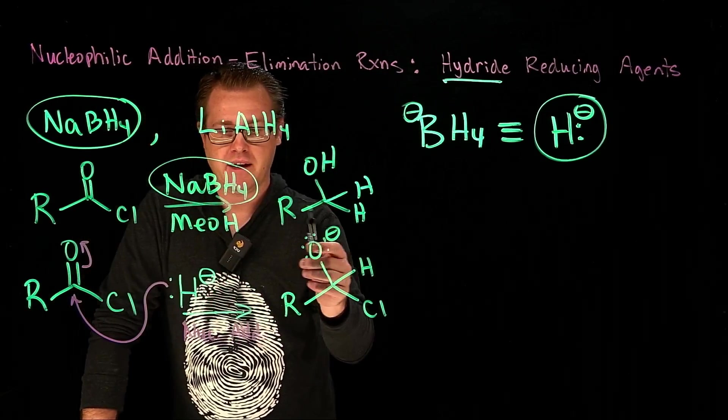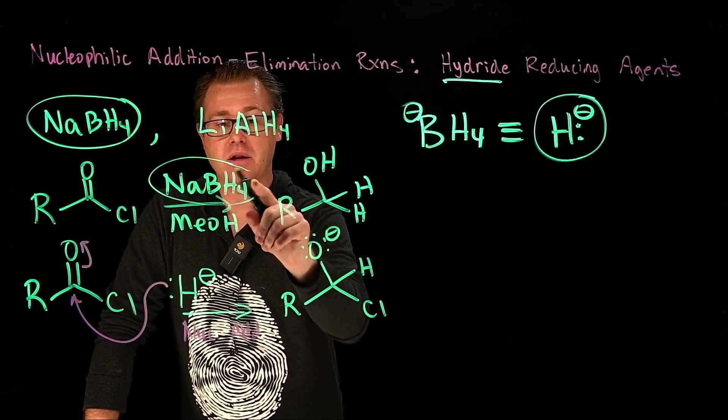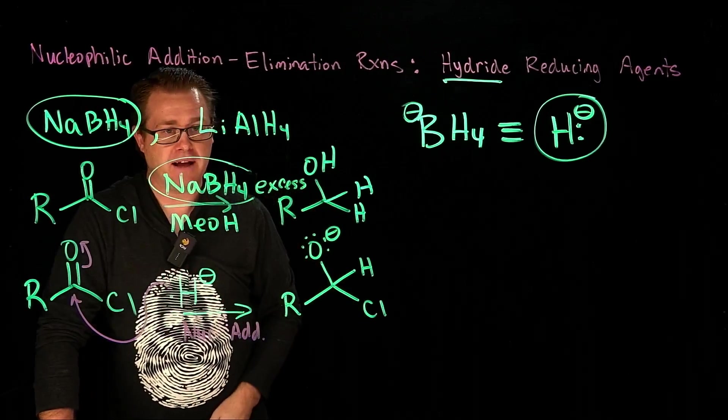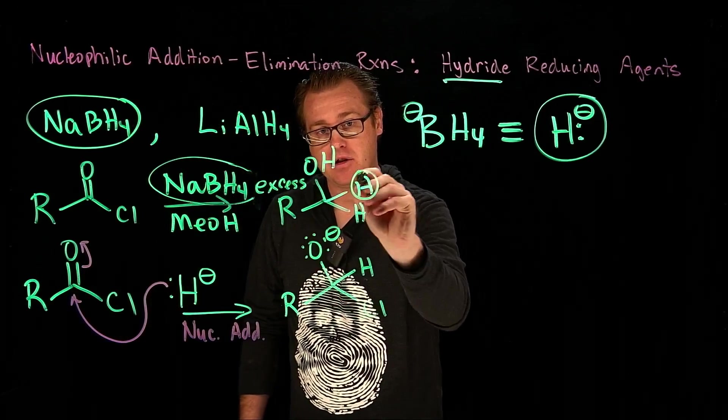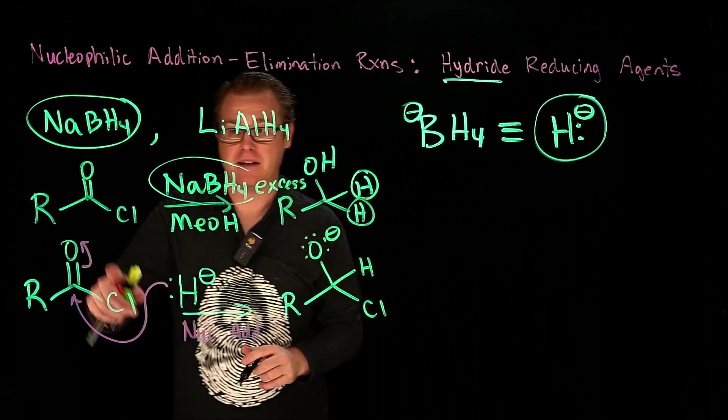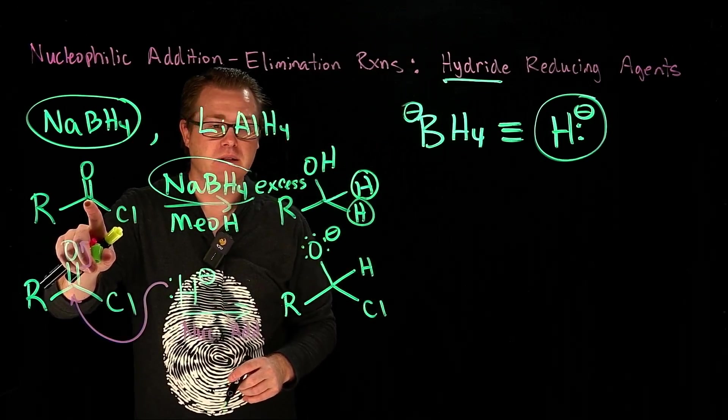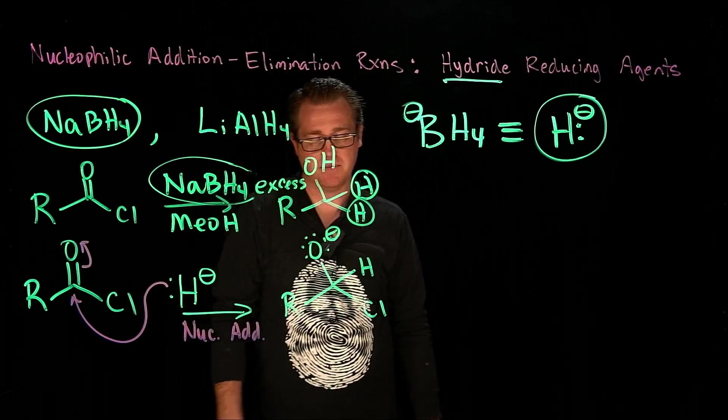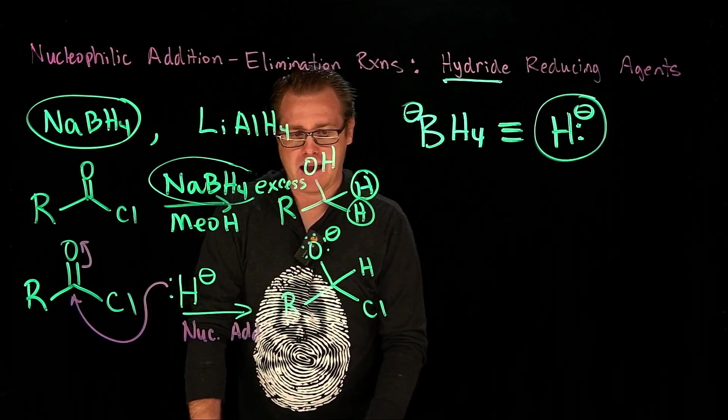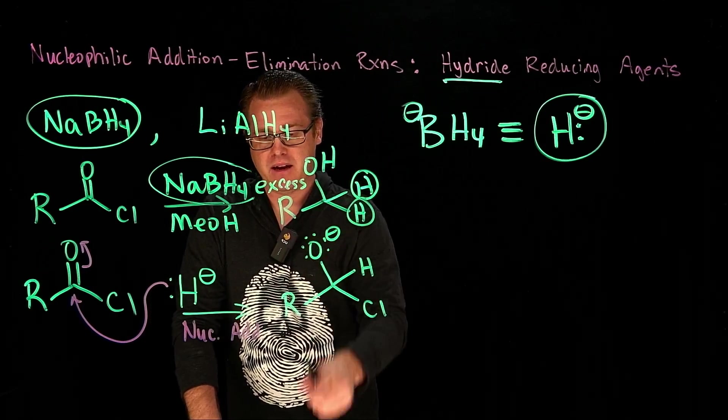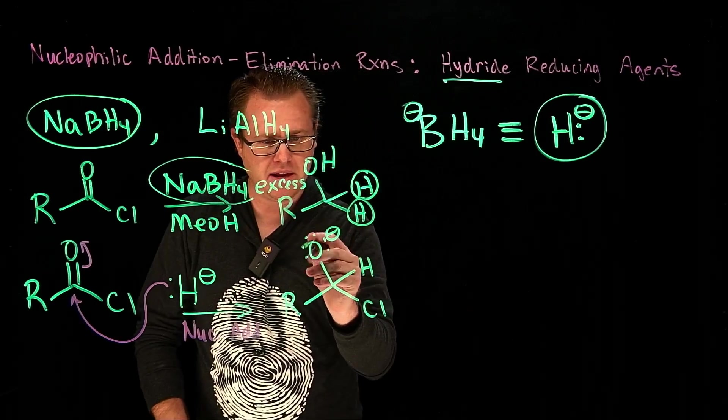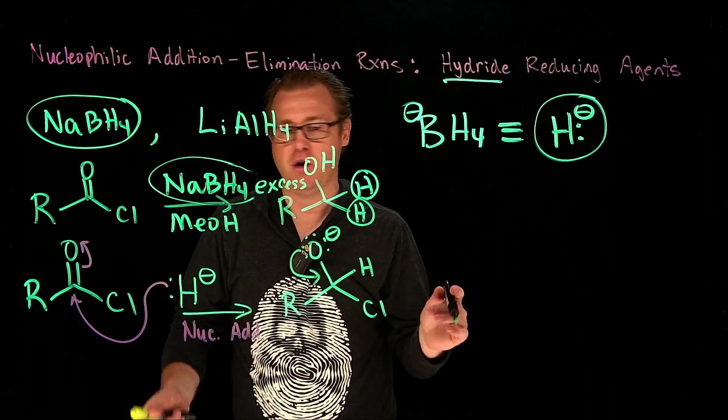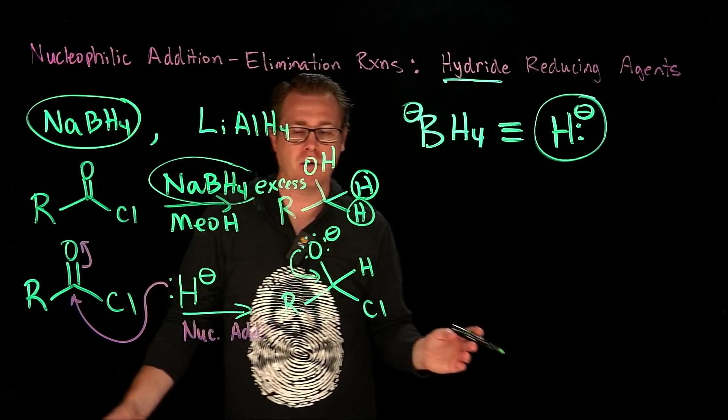Now when we do a reduction here, we have to add it in excess, because you have to add, at the end of the day, two hydrogens to that carbonyl carbon. So you need at least two to three equivalents of the sodium borohydride. Now we get this species right here. Now what's interesting is, do you think these lone pairs can come down and kick off the hydrogen? No. Hydrogen is a horrible leaving group.